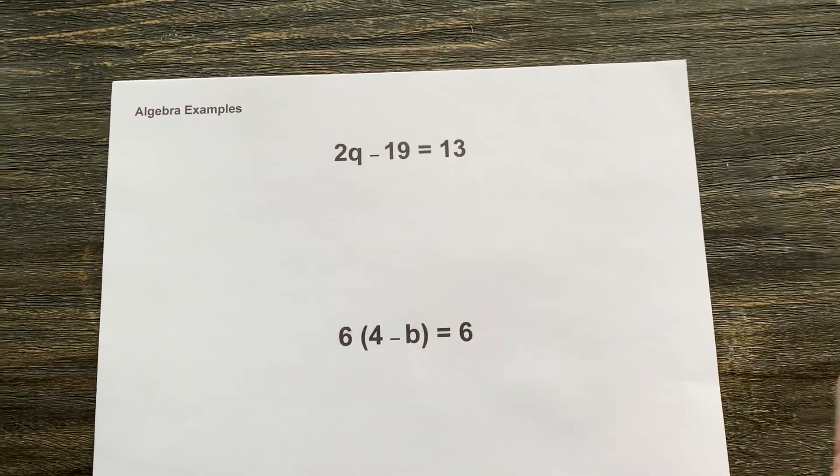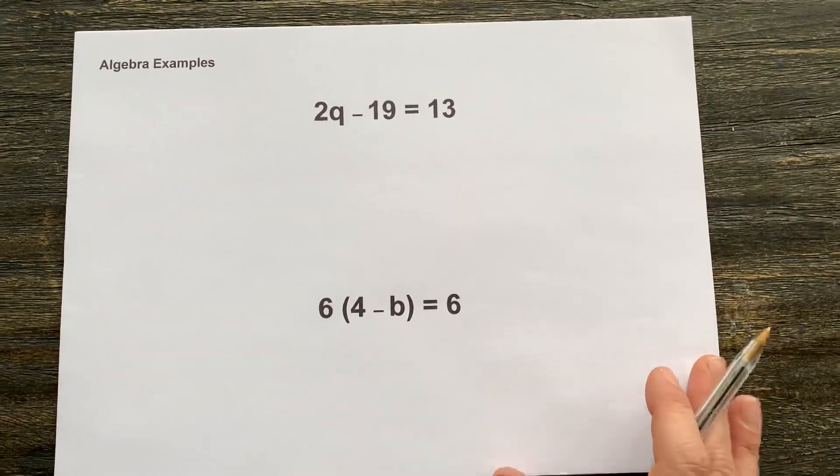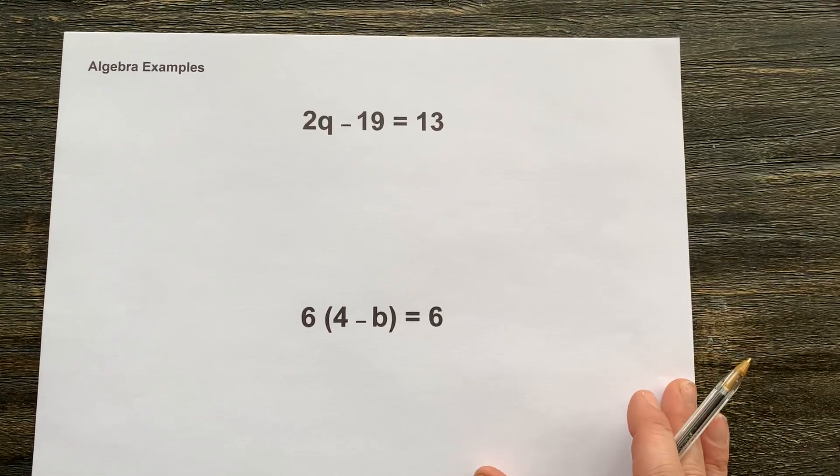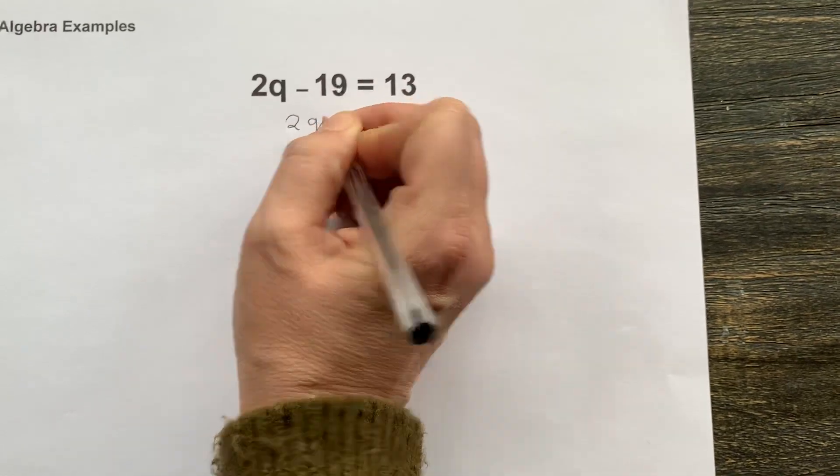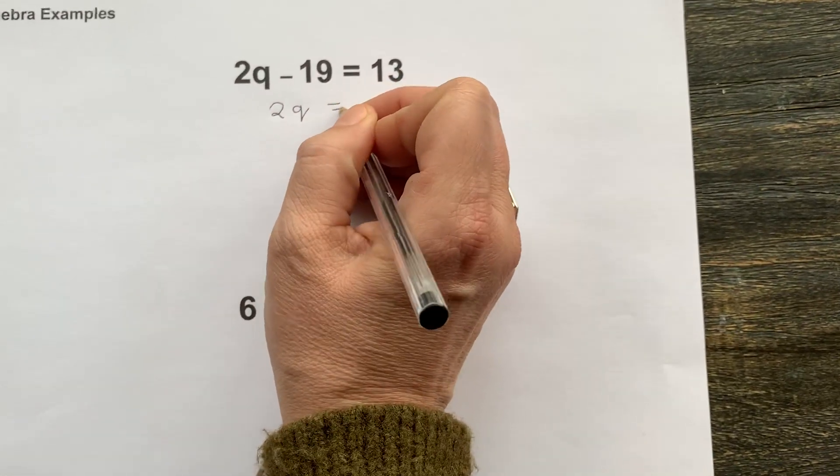To solve this equation, we need to get q on its own, and we're going to do that in several steps. If we look here, I'm going to keep 2q here, and it currently equals 13.